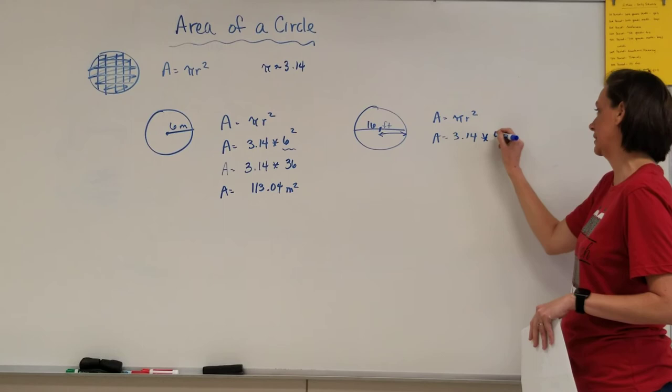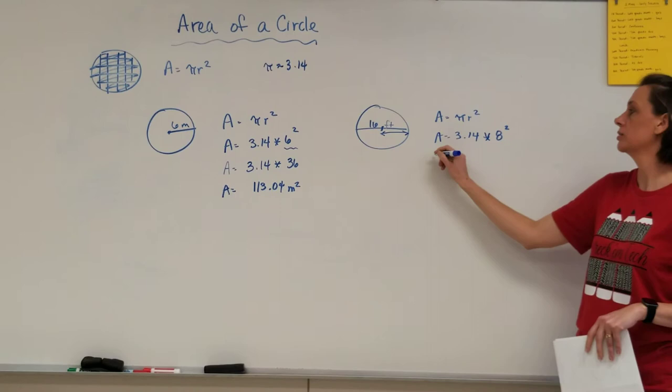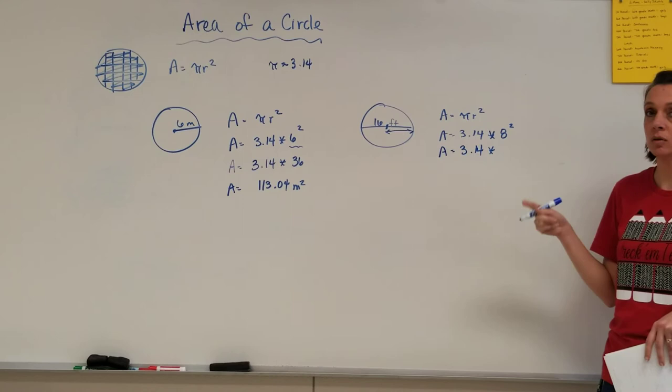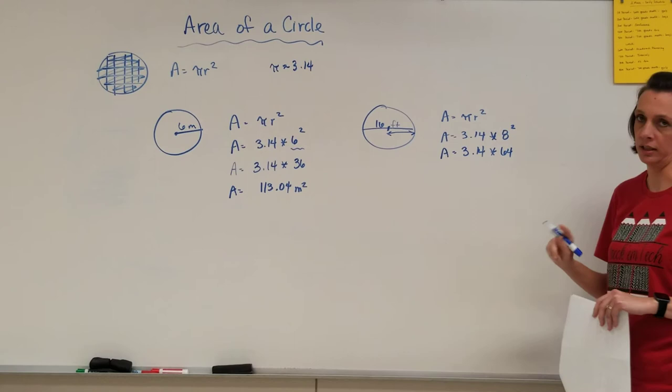Mark our formula with our square here. So area is going to equal 3.14 times 8 squared - 8 times itself. 8 times 8 is 64, not 8 times 2 is 16. Make sure you're squaring, not multiplying by 2.